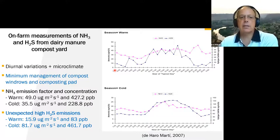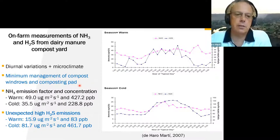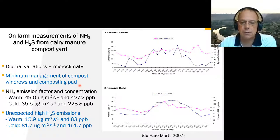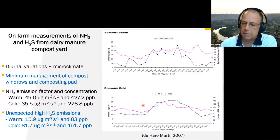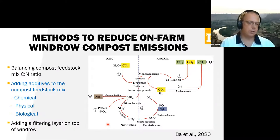The compost pad had at that time a minimum management, so during the cold season it got flooded. The emissions factors I express here per square meter of surface of the composting pad. We have an unexpectedly high hydrogen sulfide emissions during the cold season, which is attributable to that flooding and to the lack of turning on the windrows. So now, how we control those emissions from the compost.